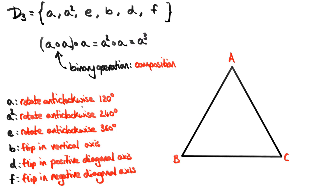We could call this A cubed, since we have A squared composed with A. But this transformation — the identity transformation, the transformation which does nothing at all — is usually represented by the letter E. That's why I wrote it in that order, and we're going to continue to use the letter E to represent this. Next, we have the letter B representing the flip in the vertical axis. With rotations, the order of labels on the vertices always goes A, B, C in the anticlockwise direction, but when we make a flip in any axis, the order goes A, C, B. So there's no way we can compose rotations together to produce what looks like a flip in the vertical axis — I'm happy just to call that flip B.